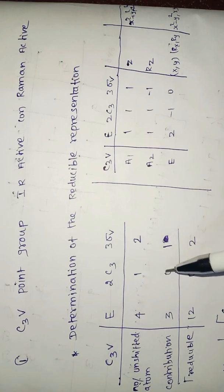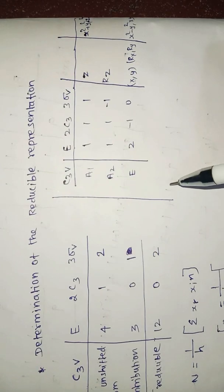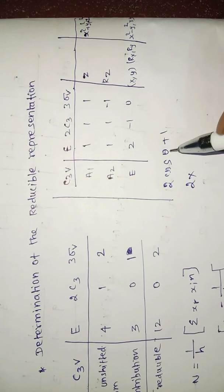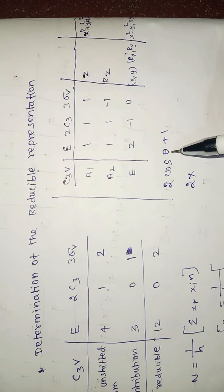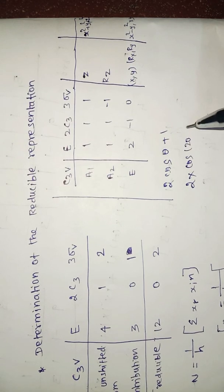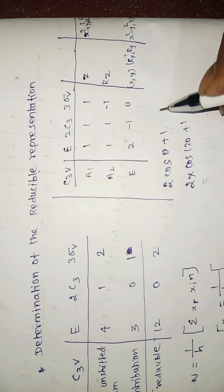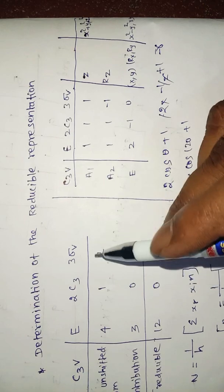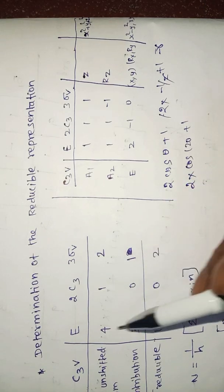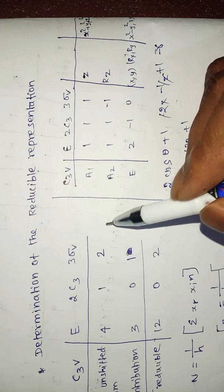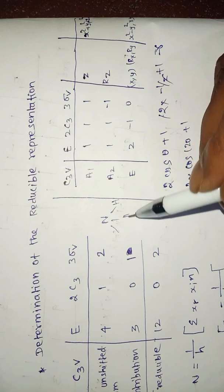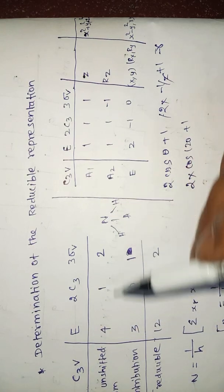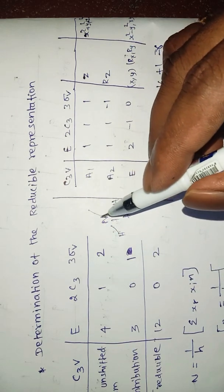The contribution for E equals 3. For C3, the contribution equals 0. This is calculated using the formula 2cos(θ) + 1. For C3, θ = 120°, so 2cos(120°) + 1 = 2(-1/2) + 1 = 0.